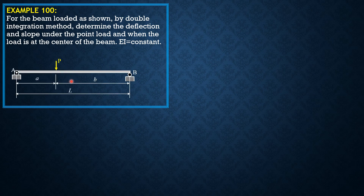First, let's compute for the reactions. Setting moment at B equal to zero, clockwise positive, we have AY times L minus P times B equals zero. So AY equals PB over L.